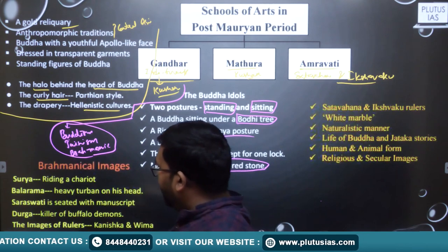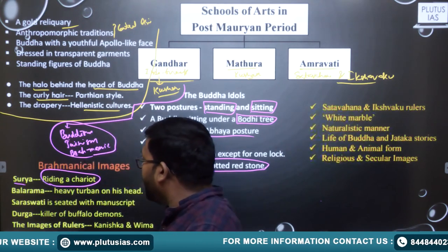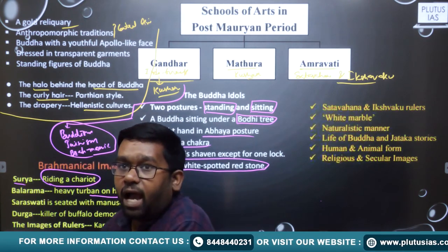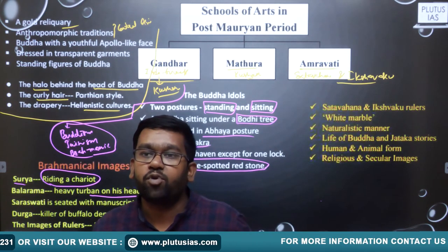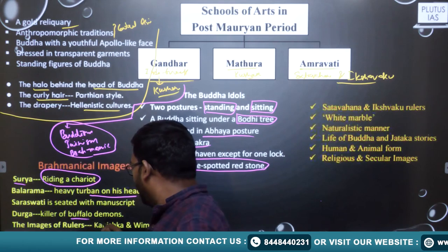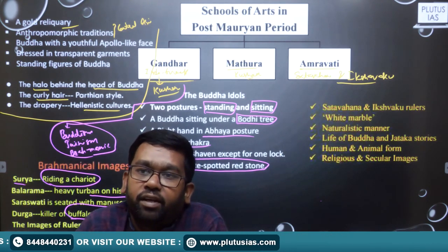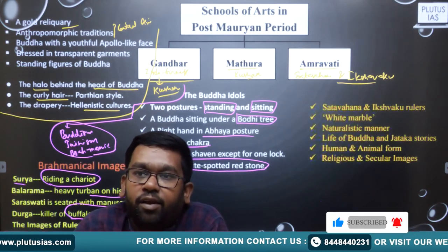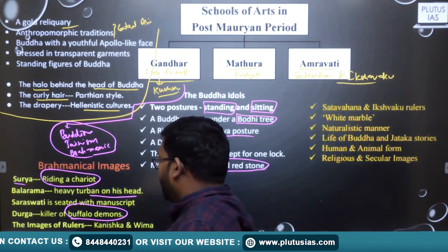In the Brahmanical tradition, we have found Surya riding a chariot. Then we have Balram with a heavy turban on his head. Saraswati is seated with a manuscript, as depicted in contemporary India — how Saraswati is depicted in Indian culture, shown in the post-Mauryan period with a manuscript in her hand. Durga is defined as the killer of the buffalo demon, that is Mahishasura. During Navratri you find Durga everywhere in Indian culture, and you find that Durga has been killing Mahishasura.